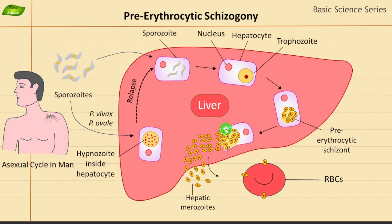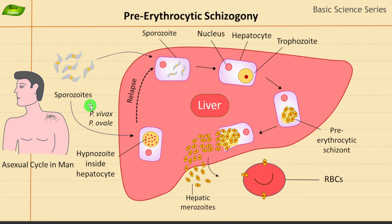The steps can be divided into different phases: initiation, where sporozoites enter the host and reach the liver cell; invasion of liver cells (hepatocytes), where the parasite enters the liver cell; then asexual reproduction where the schizont produces many merozoites; and finally release of merozoites. Different important phases are present in the pre-erythrocytic schizogony.